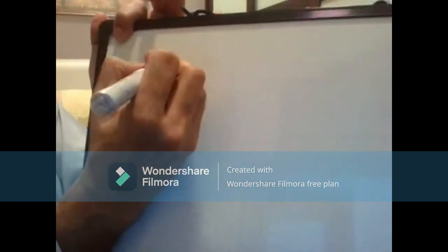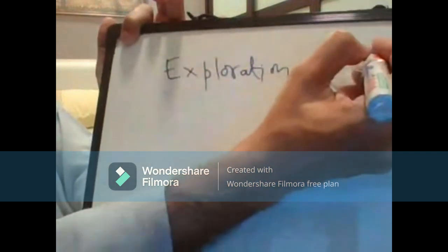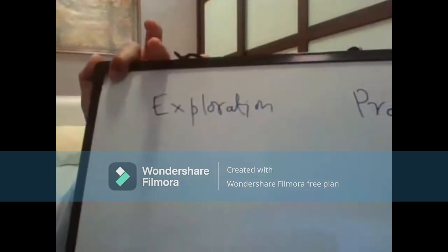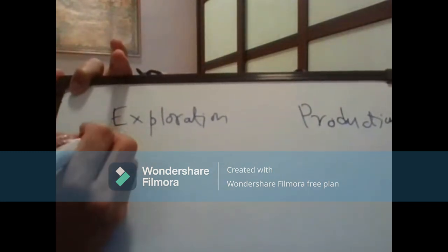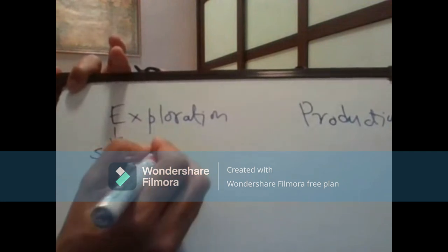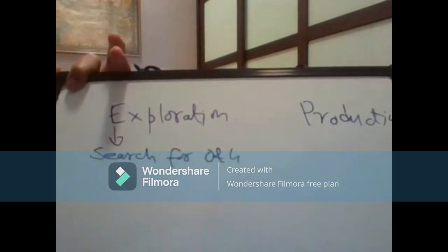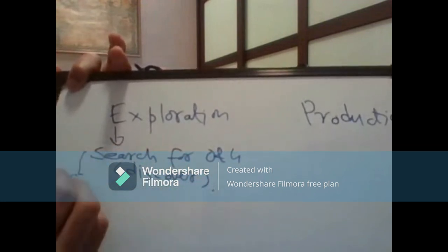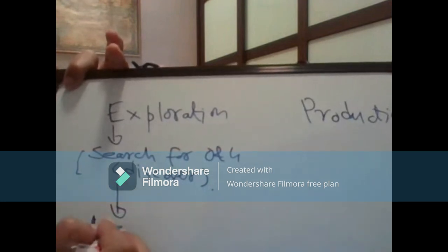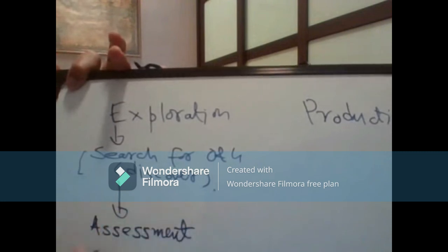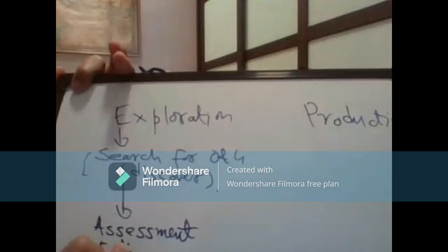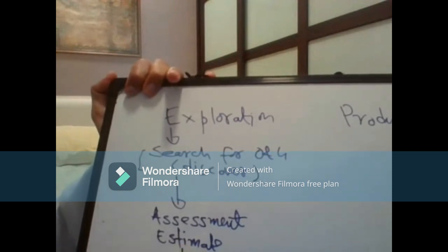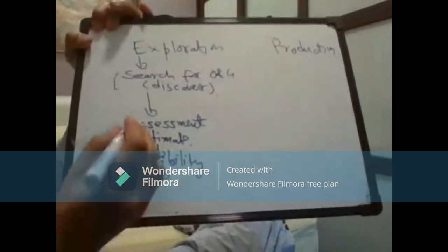When we talk about oil and gas, there are two things: exploration and production. Exploration means, first of all, a search for oil and gas sources. After the search comes discovery, and after discovery we do an assessment of reserves, which means you have to estimate. Then comes feasibility, and if feasible, we go for engineering.